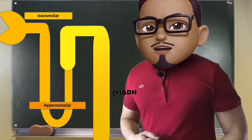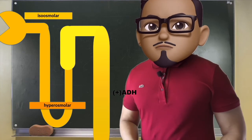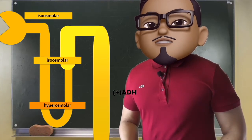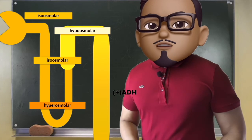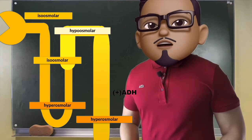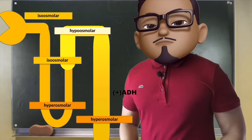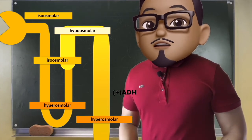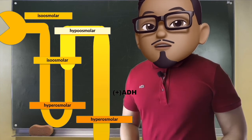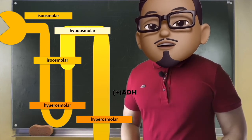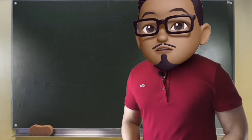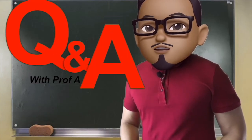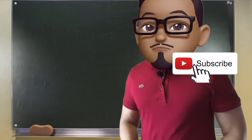What is important to remember is that with the counter-current system, we are able to handle water effectively. The tubular fluid that enters the distal tubule is always hypotonic regardless of the presence or absence of ADH. The final urine concentration in the collecting duct with ADH is hyperosmolar. For more high-yield concepts in renal physiology, don't forget to click the subscribe button.